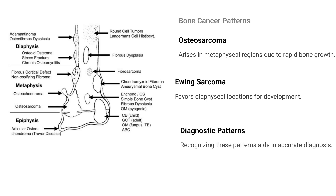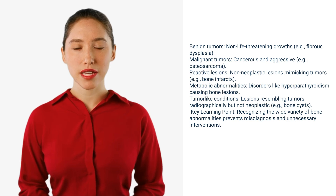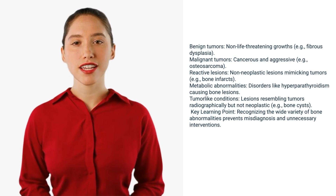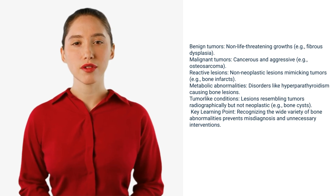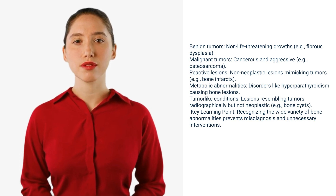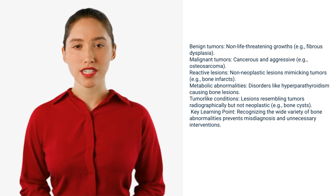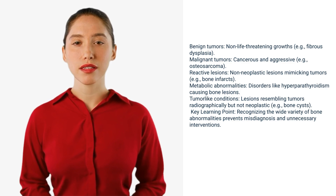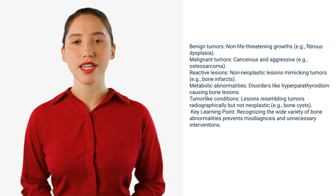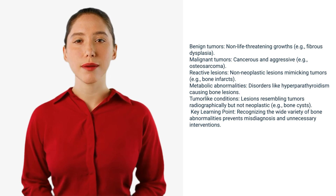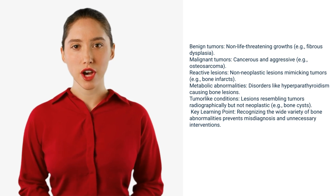Recognizing these patterns aids in accurate diagnosis. Benign tumors are non-life-threatening growths — for example, fibrous dysplasia. Malignant tumors are cancerous and aggressive — for example, osteosarcoma.